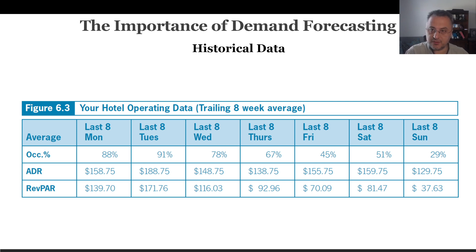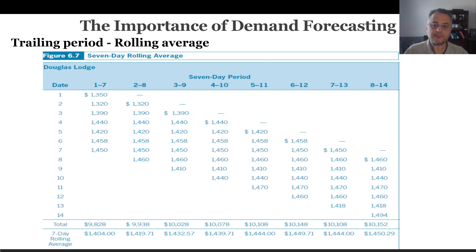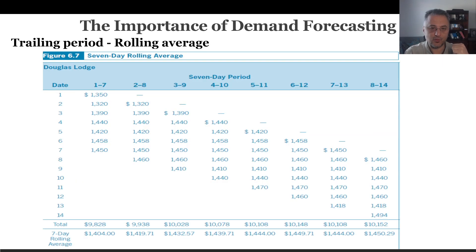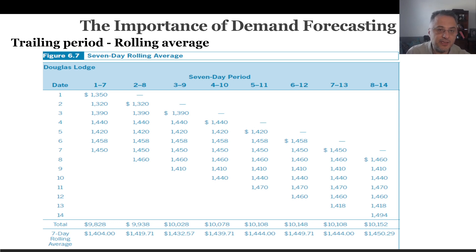Why do we use trailing or rolling averages? A trailing period is a data collection method where you discard the oldest piece of data when the newest data is added, keeping the data set size constant. We usually use trailing period data in calculating a rolling average. For example, with eight Mondays, once a new week passes, you discard the oldest Monday and add the new one. In another example from the book, they use a seven-day rolling average the same way.